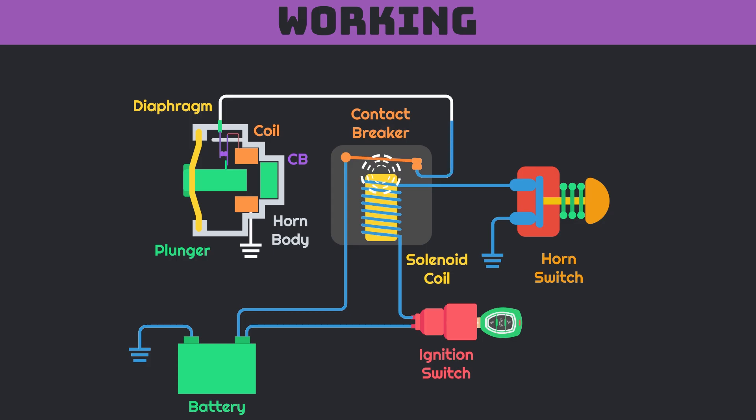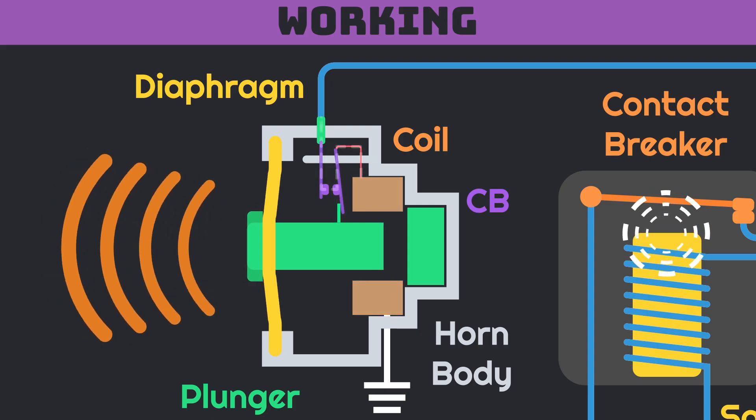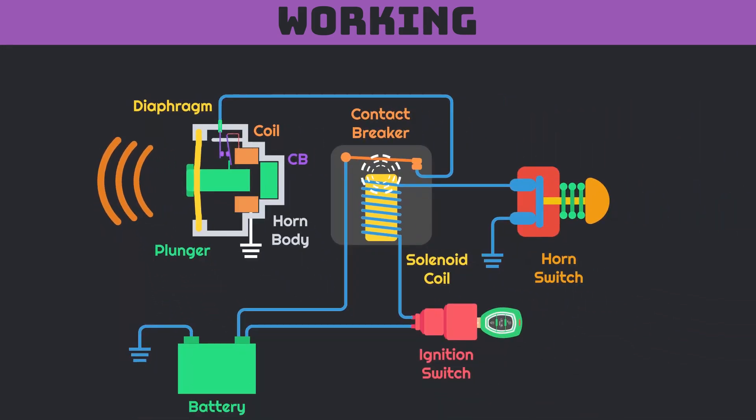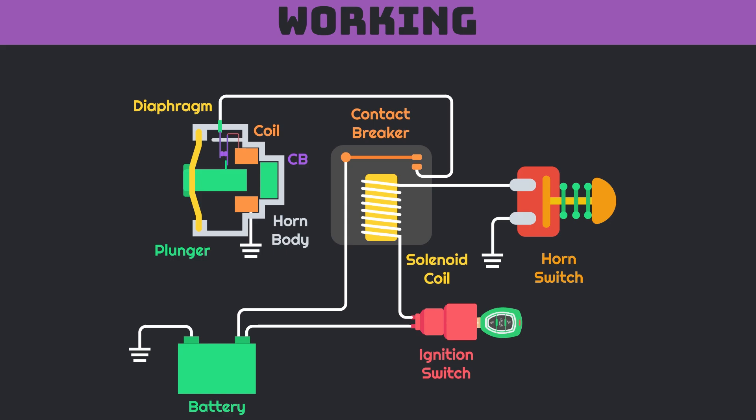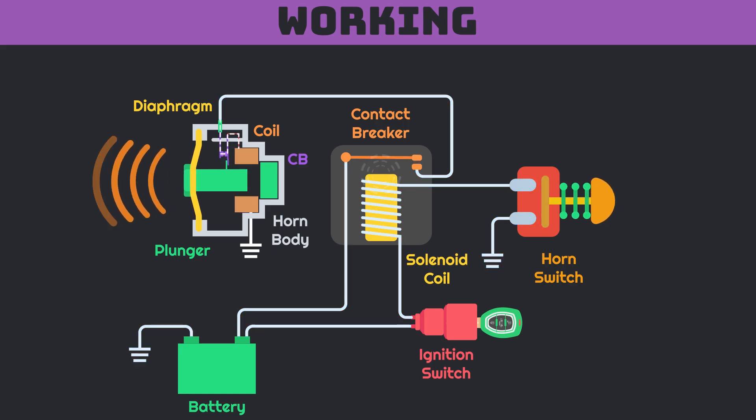This causes the excitation of solenoid in the horn and it attracts the plunger inside. Thus diaphragm gets deflected with opening of circuit via contact breaker, which removes the excitation of coil and plunger returns to its original position, which causes the completion of high current circuit again. This cycle repeats very fast and vibrates the diaphragm at specific frequency, which produces the horn sound. So whenever you press the horn button, it activates the relay and relay vibrates the metal diaphragm at specific frequency, and instantly you hear that beeping horn sound.